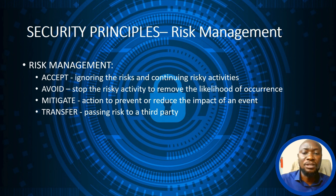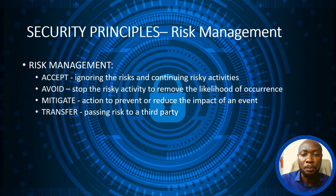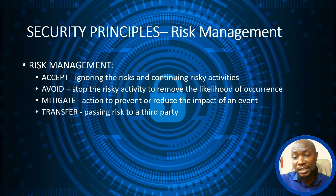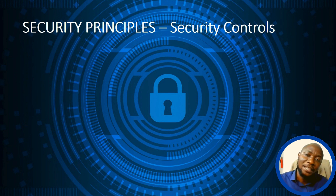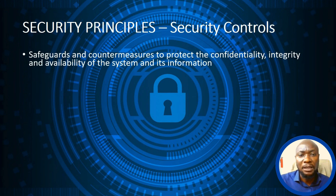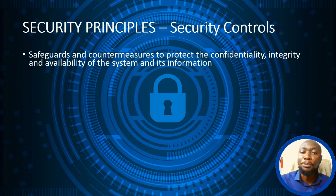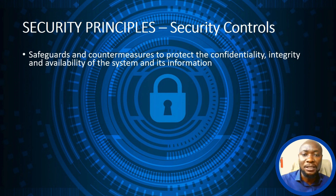The fourth approach is to Transfer Risk — passing the risk to a third party. This is very common with insurance, where the insurance company bears the risk when you transfer it to them. Another key topic under Domain One is Security Controls — safeguards and countermeasures that protect the Confidentiality, Integrity, and Availability of systems and information within an organization.